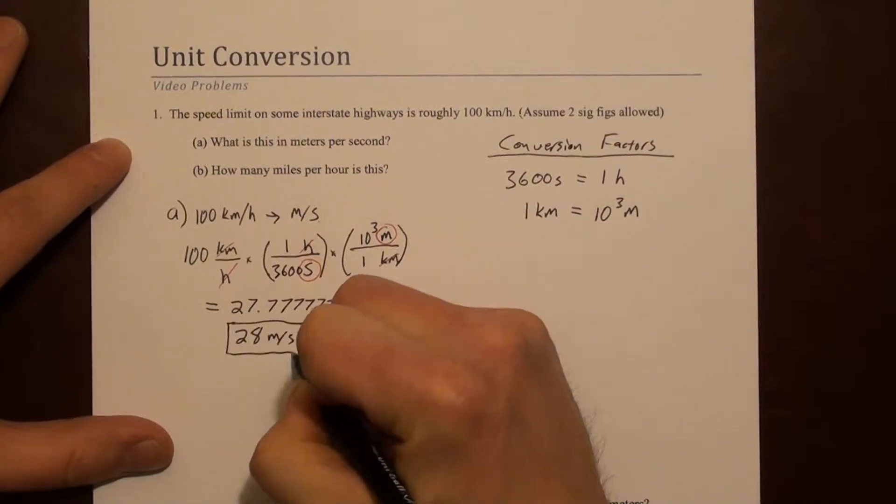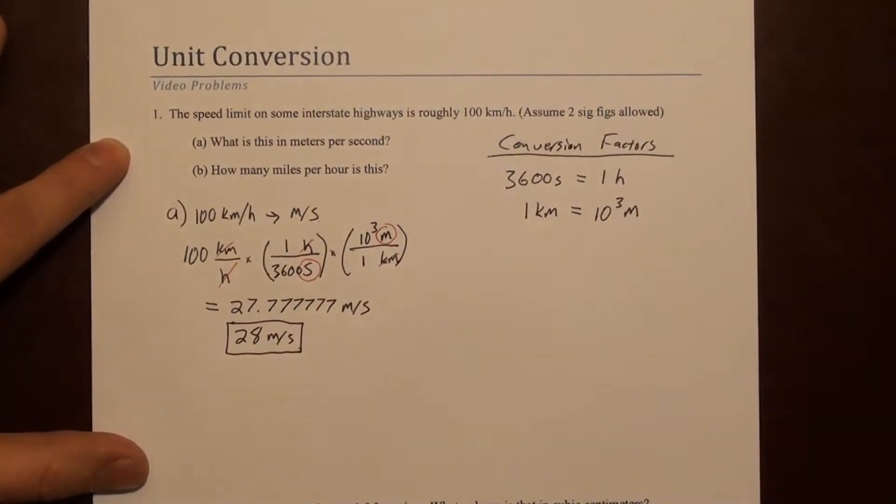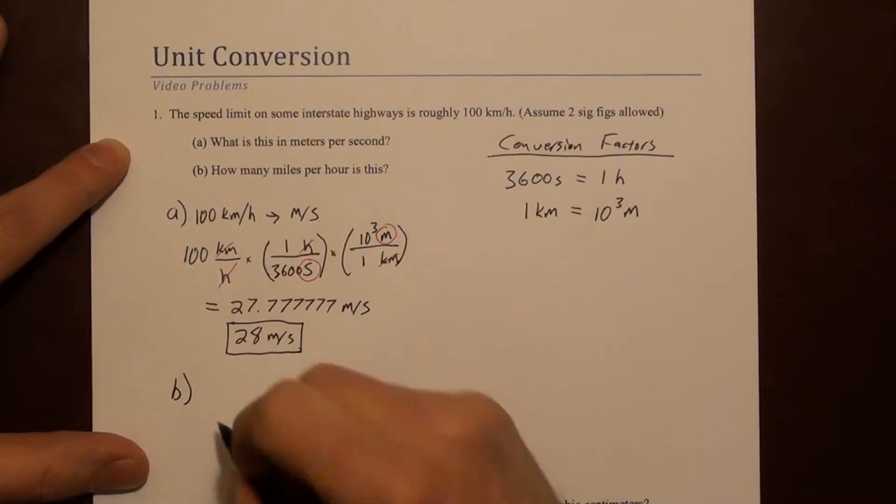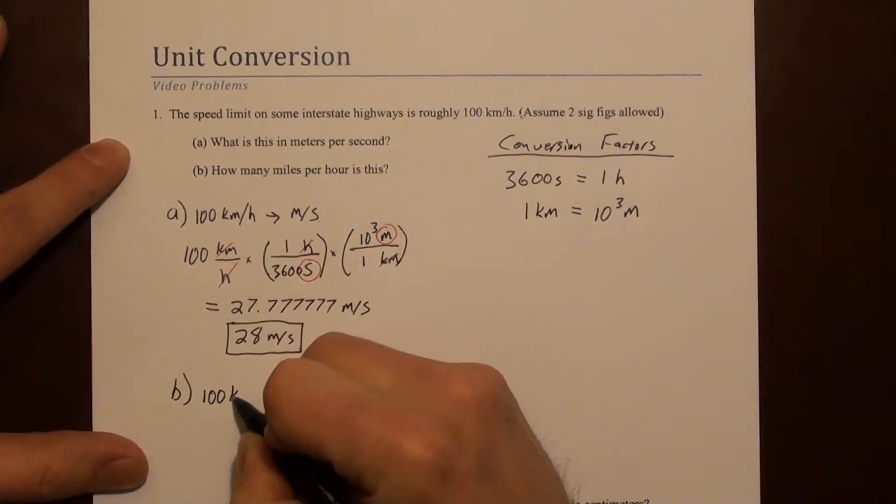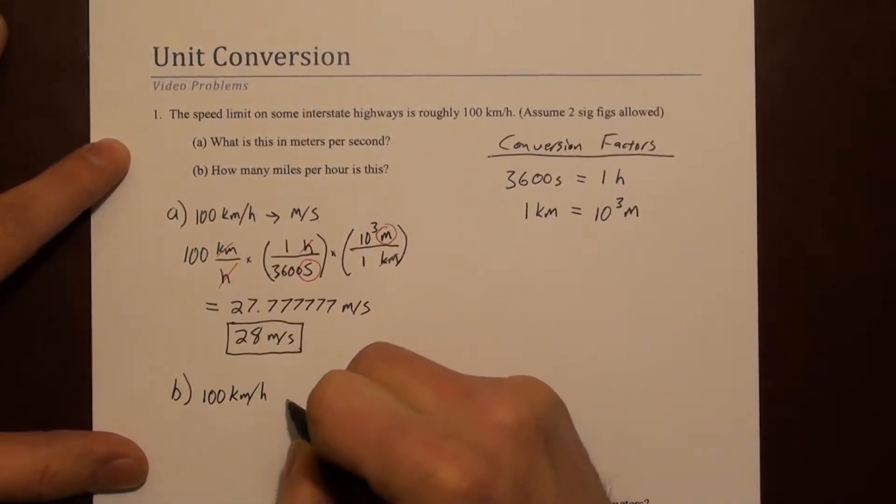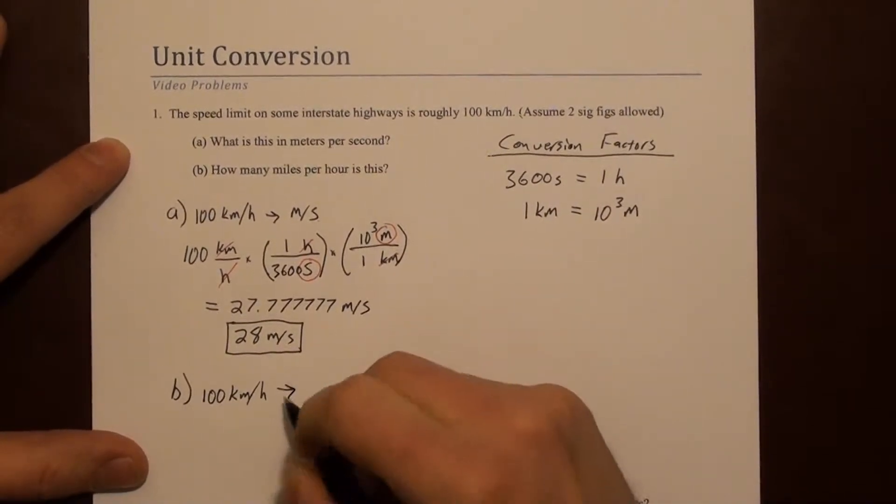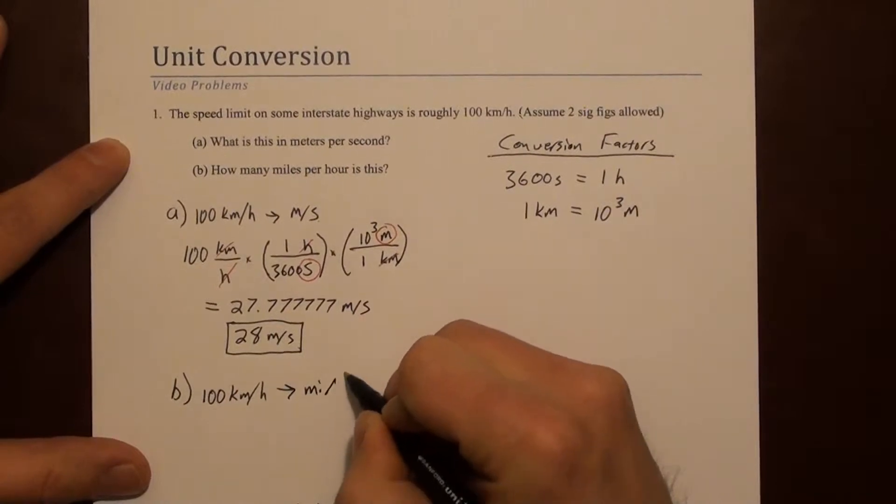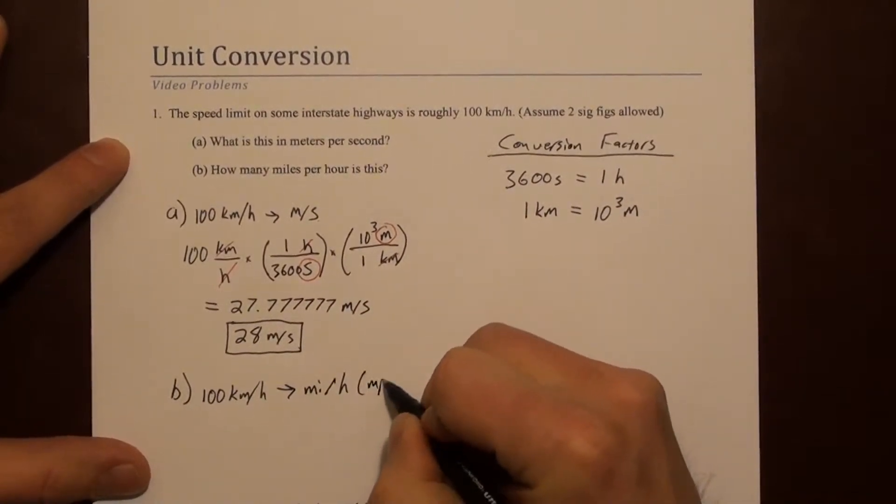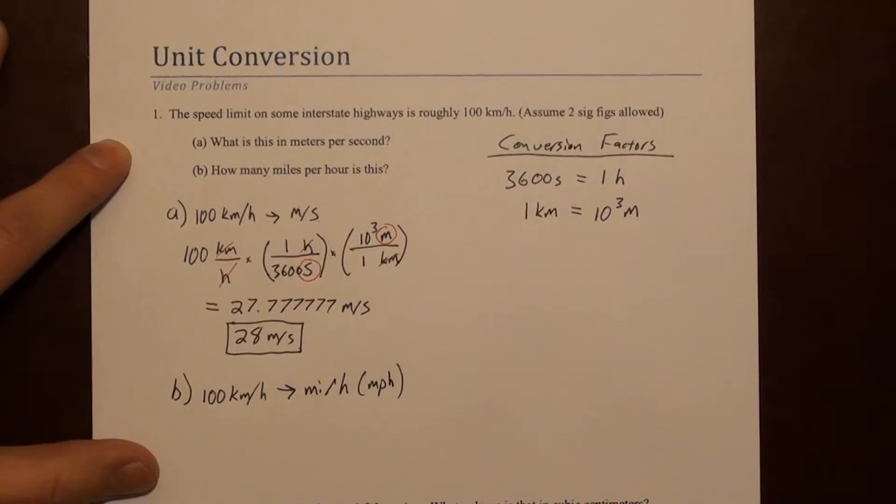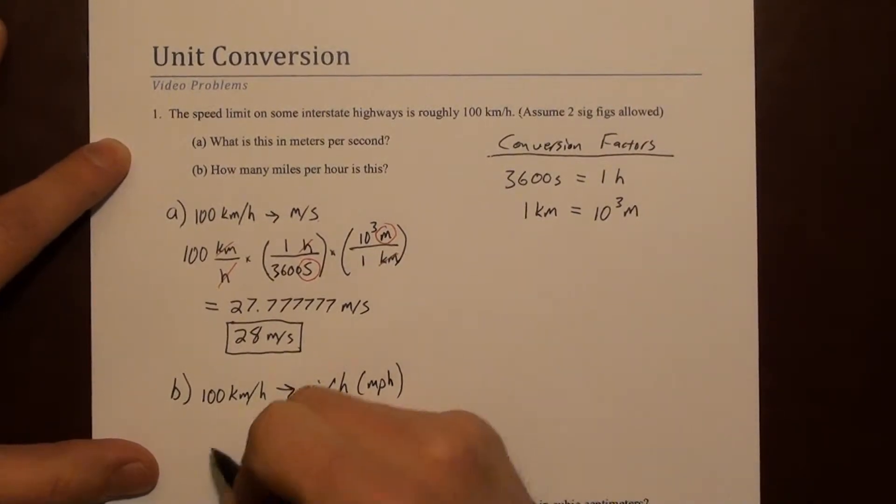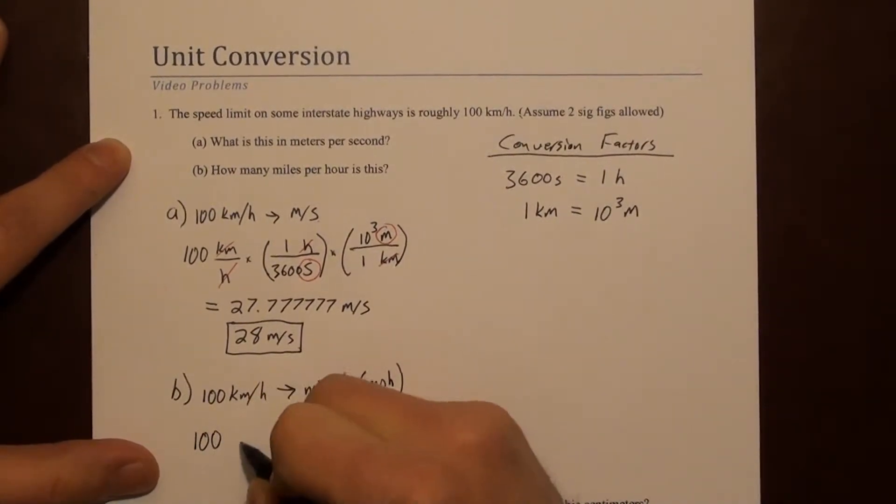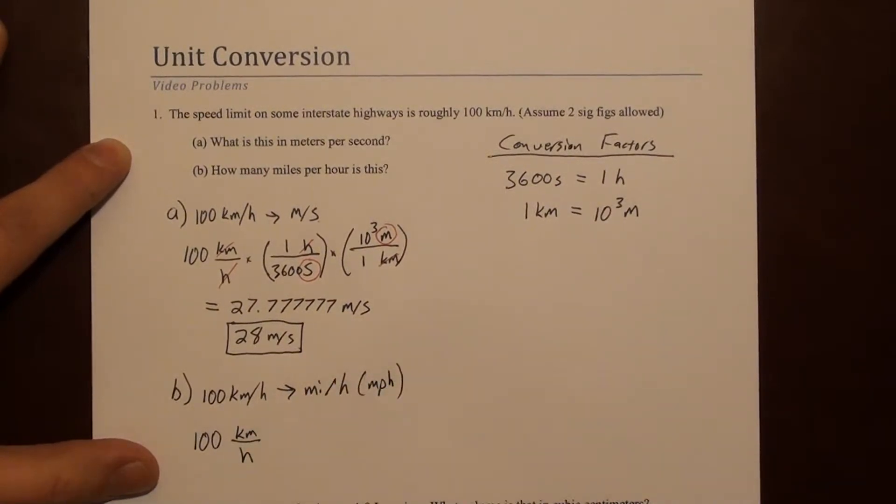Okay. So letter B here says, let's turn this 100 kilometers per hour to miles per hour. Sometimes you write that mph. Okay, so we'll set this up: 100 kilometers per hour. And it looks like the time is already okay. We're just going from kilometers to miles.